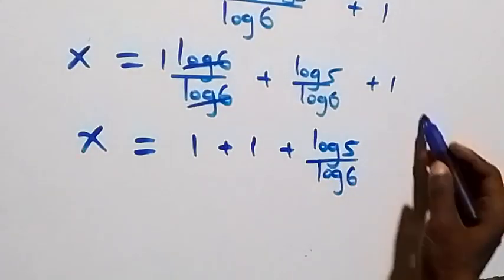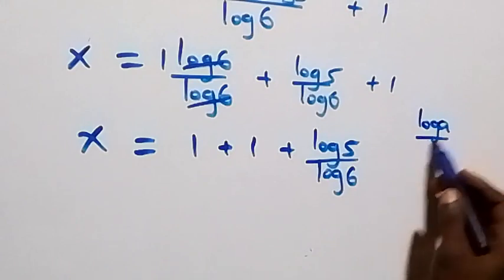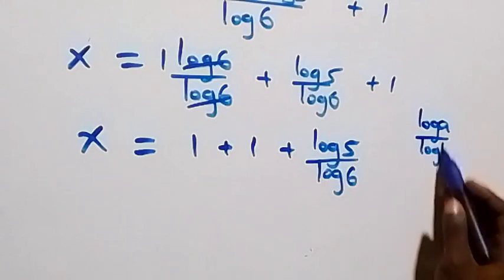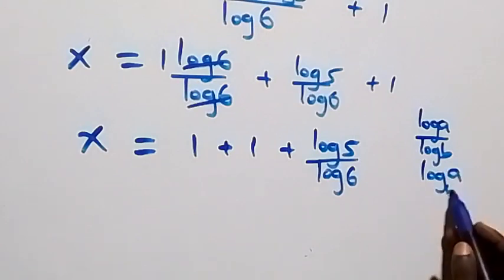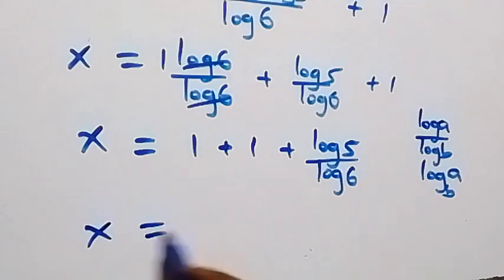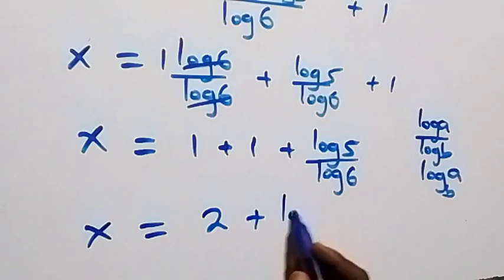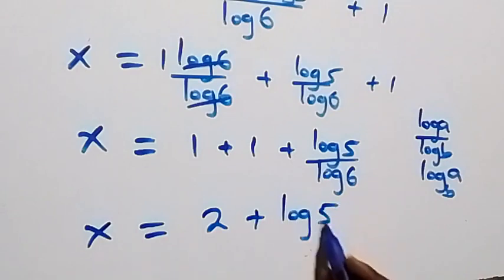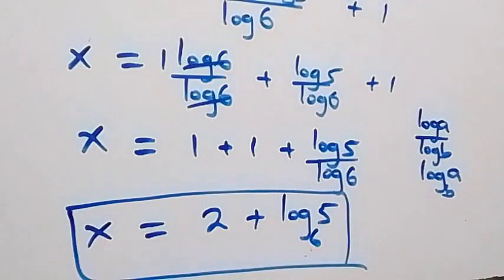Then here we apply the change of base rule: log a over log b can be written as log a to base b. So log 5 over log 6 becomes log 5 to base 6. Therefore x equals 1 plus 1, which is 2, plus log 5 to base 6. So the value of x is x equals 2 plus log₆5.